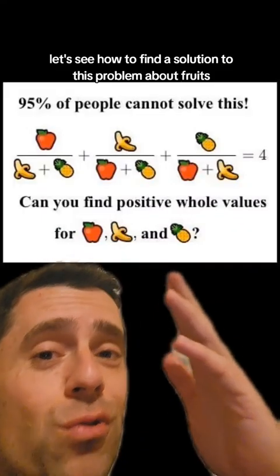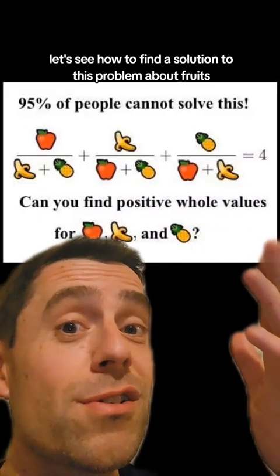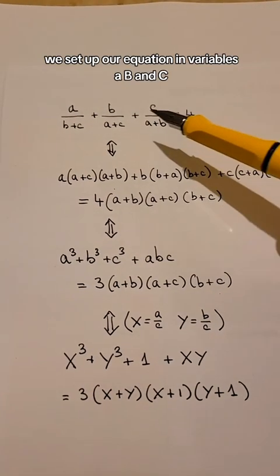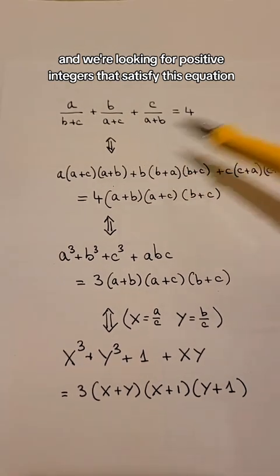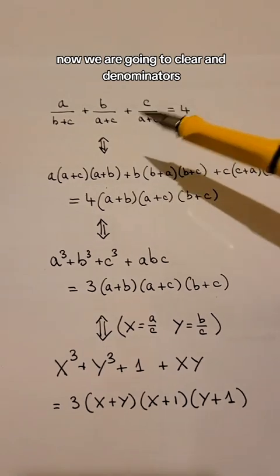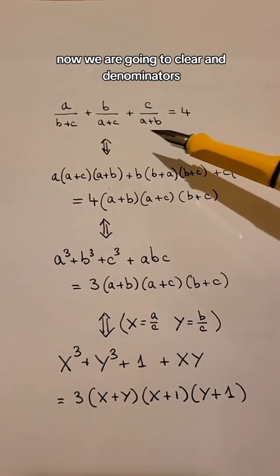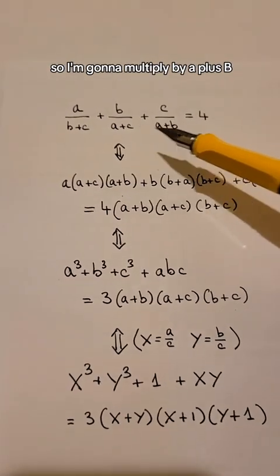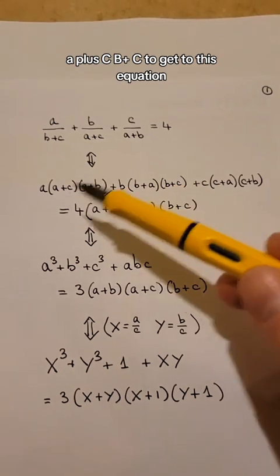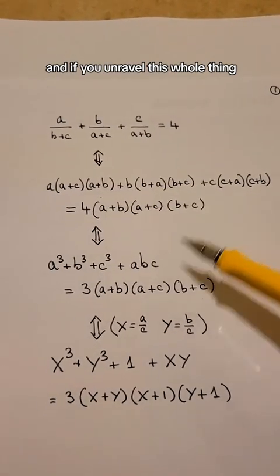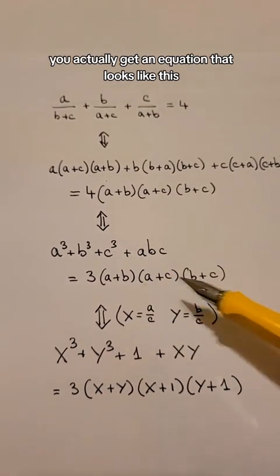Let's see how to find a solution to this problem about fruits. First of all, we set up our equation in variables a, b, and c, and we're looking for positive integers that satisfy this equation. Now we are going to clear denominators, so I'm going to multiply by (a+b)(a+c)(b+c) to get to this equation, and if you unravel this whole thing, you actually get an equation that looks like this.